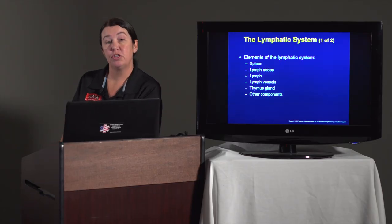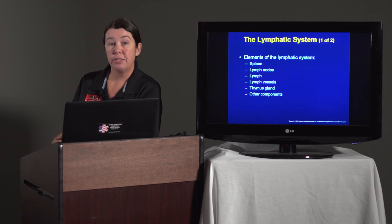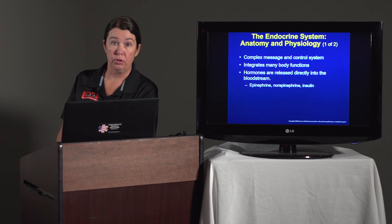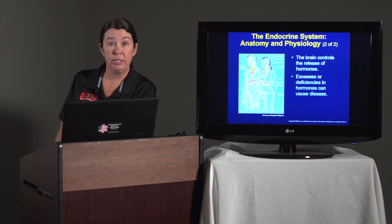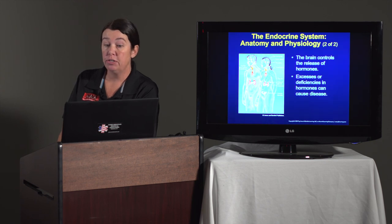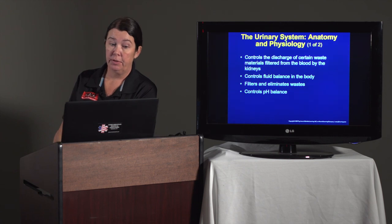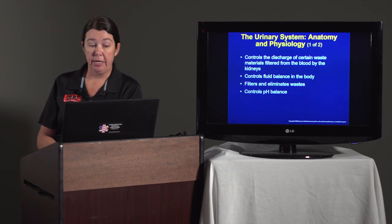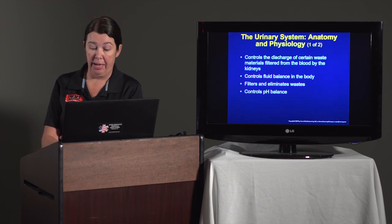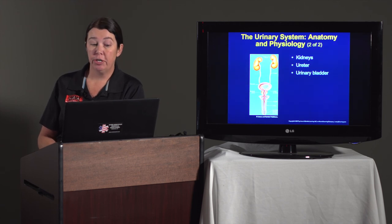Elements of the lymphatic system include the spleen, lymph nodes, vessels of the lymph, the thymus gland, and other components. The lymphatic system supports the circulatory system and immune system. Lymph is a thin straw-colored fluid that carries oxygen and nutrients to cells and waste products away. The endocrine system is a complex message and control system that integrates many body functions; hormones are released directly into the bloodstream, including epinephrine, norepinephrine, and insulin. The brain controls the release of these hormones, and excesses or deficiencies can cause disease, for example diabetes. The urinary system controls discharge of certain waste materials filtered from the blood by the kidneys, controls fluid balance, filters and eliminates waste, and controls pH balance. It consists of the kidneys, ureter, and urinary bladder.